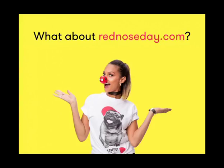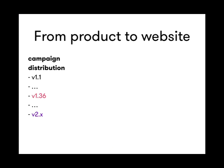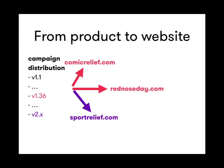So you might wonder — we've built a product with these characteristics, what about rednoseday.com? rednoseday.com is currently using version 1.36 of this distribution we've built. ComicRelief.com we're currently porting over to the distribution as well. SportRelief.com might use version 2 of our distribution. Through our version management, we have the power to change things under the hood without worrying too much about breaking three sites at the same time. rednoseday.org, our sister campaign in the USA, is also going to reuse our same codebase.